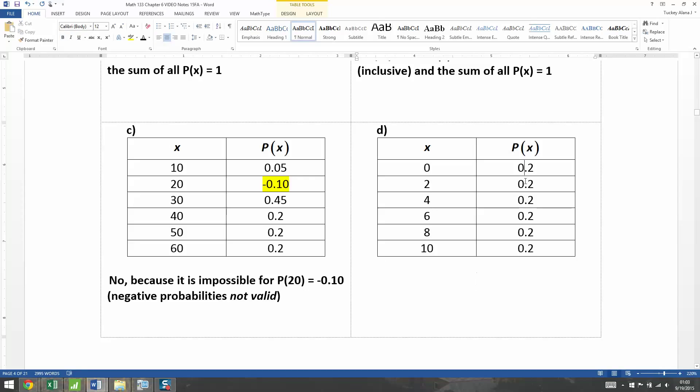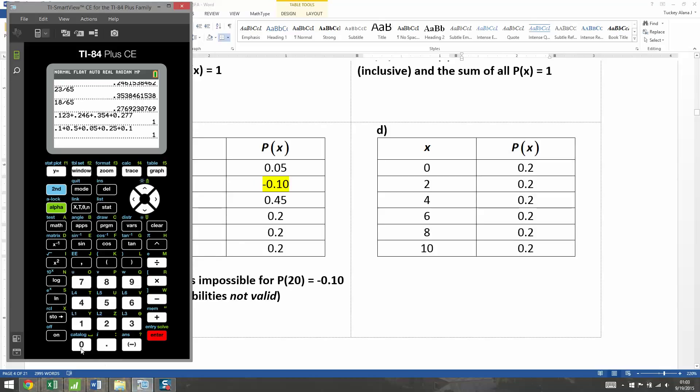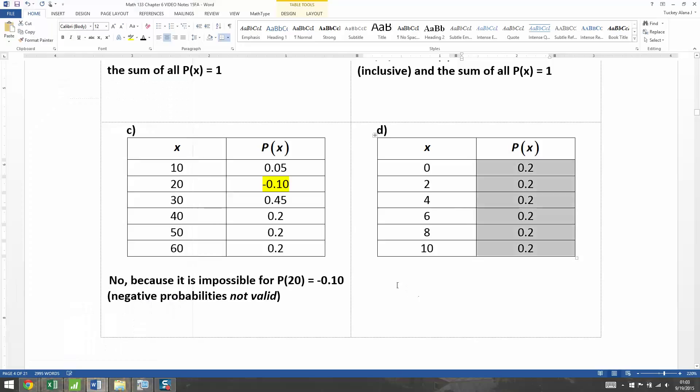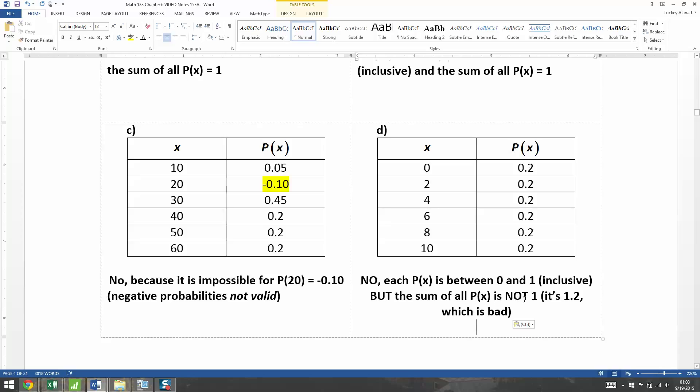Now what about over here? Well, I don't see any negative probabilities, so that's okay. Let's check the sum here. I didn't have to bother checking the sum on letter C because I knew that it wasn't going to work because of the negative probability. And for letter B, I could just do it in my head. So 1, 2, 4, 5, 6. I've got 1, 2, 3, 4. I need 2 more. And if you're savvy, you might realize this isn't going to work. Yep, the sum is 1.2. So that is not going to work either. Each probability is between 0 and 1. That's fine. But the sum of all the probabilities is not 1. It's 1.2, which is not valid.